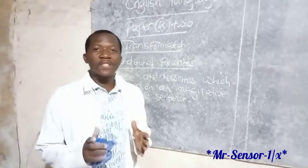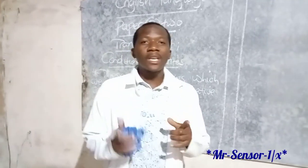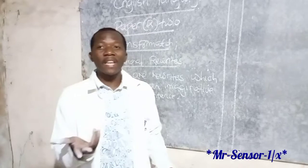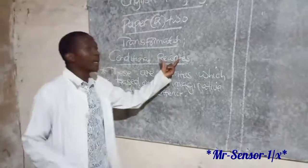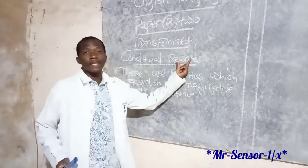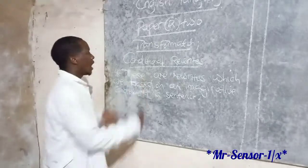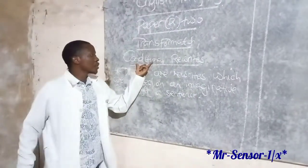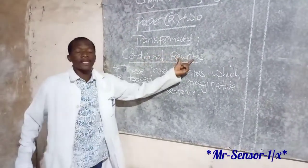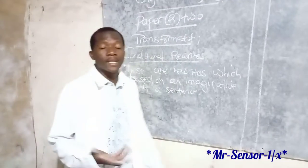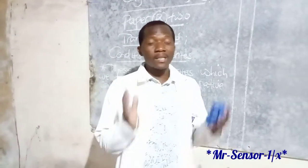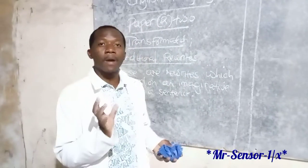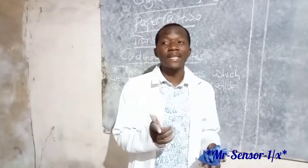When you talk about transformation, it is a certain section in English language which is written in exams, and it's going to contain rewrites. In this video, I'm only going to share with you the conditional type of rewrites. The conditional type of rewrites under English language exam and curriculum syllabus are those rewrites which start with 'unless.'